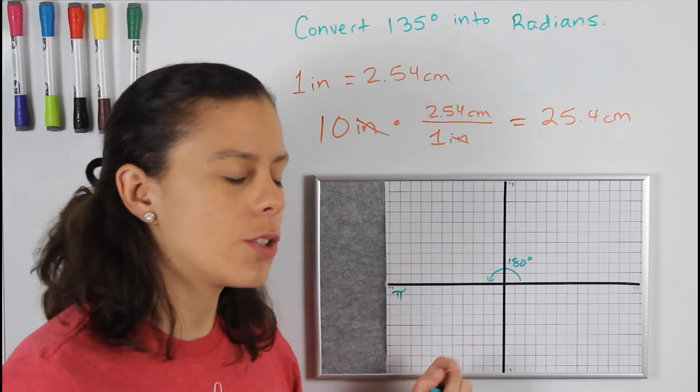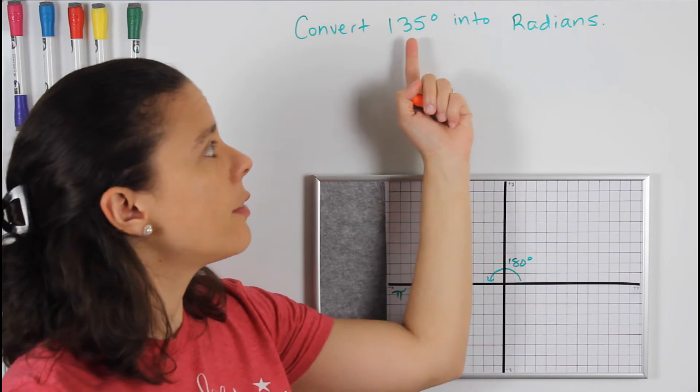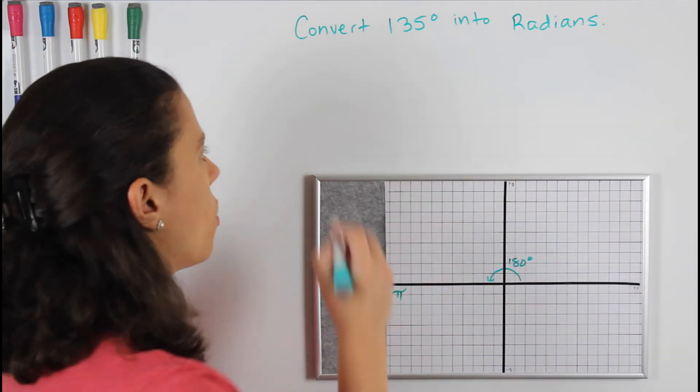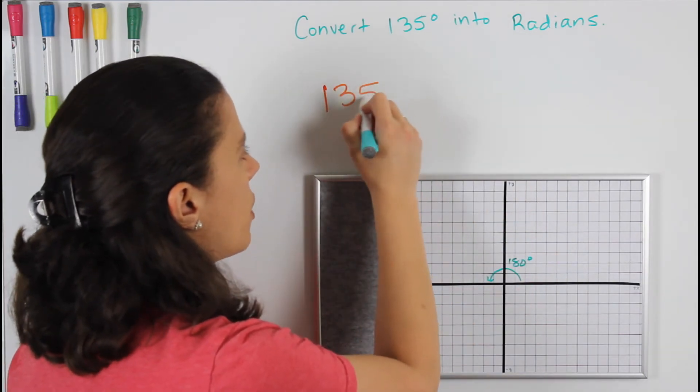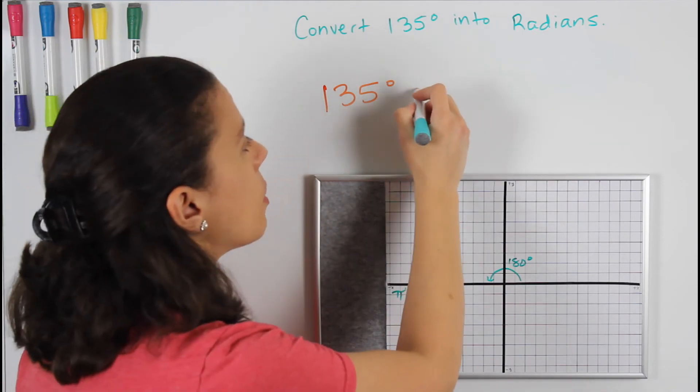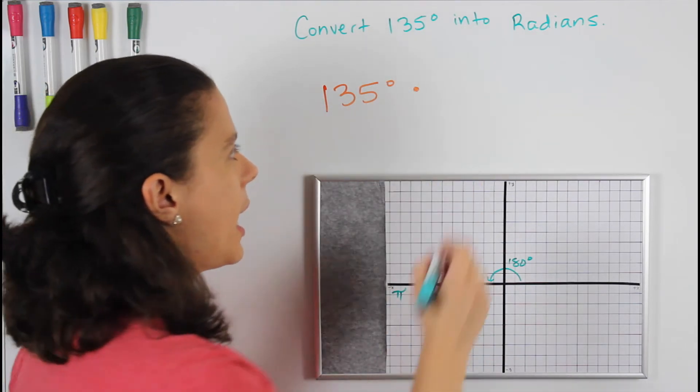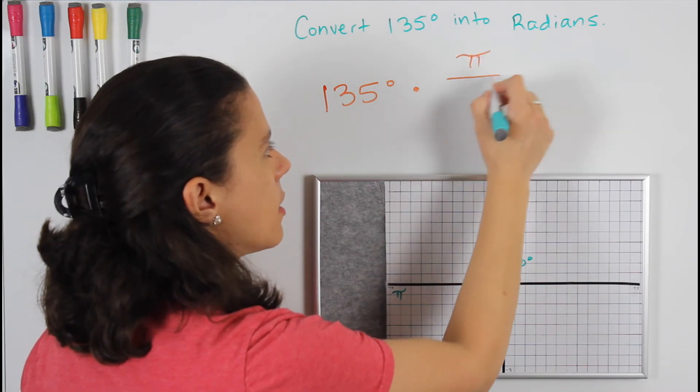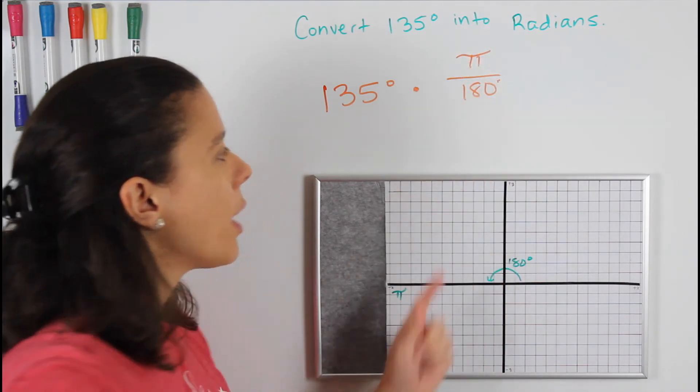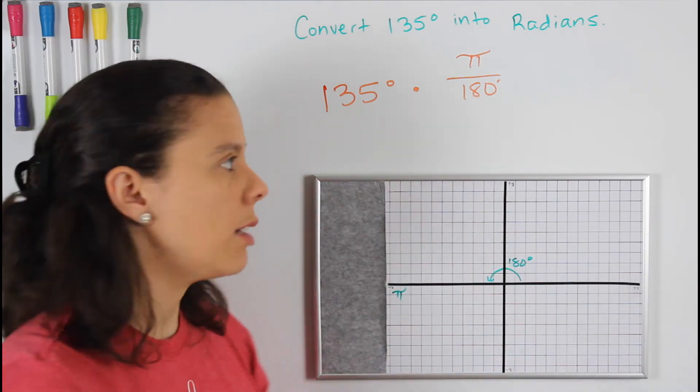Let's do it. Convert 135 degrees into radians. So what I'm going to do is start with 135 degrees, and I'm going to multiply by pi over 180 because I want to have the degrees at the bottom so that the degrees cancel out.